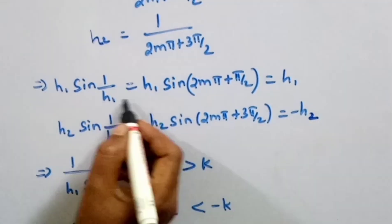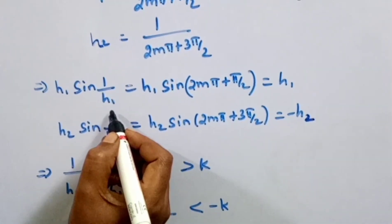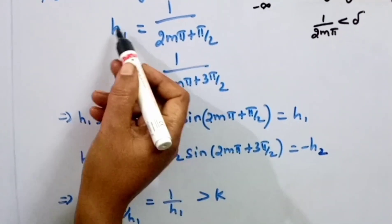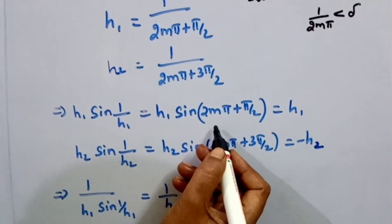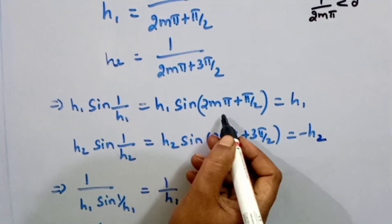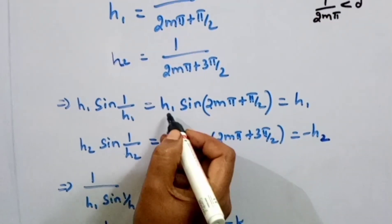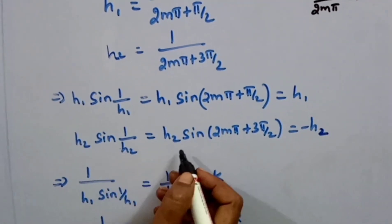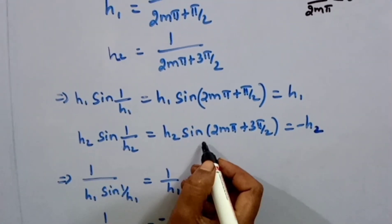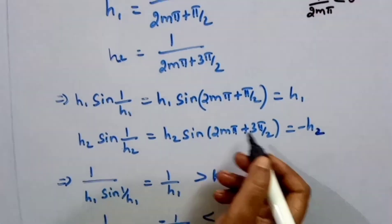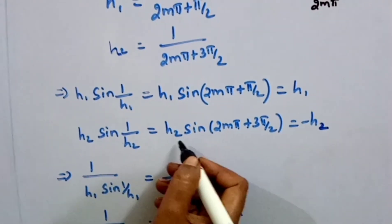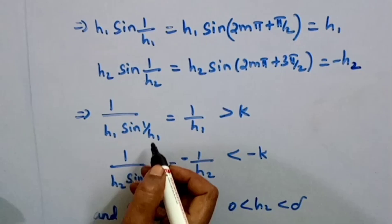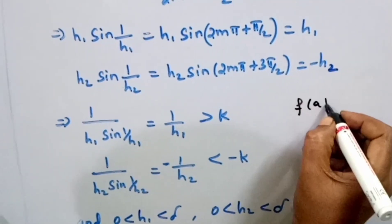We calculate the value of sin(1/h₁) and sin(1/h₂). For h₁ = 1/(2mπ), sin(1/h₁) = sin(2mπ) = 0, so we consider the reciprocal. For h₂, sin(1/h₂) = sin(2mπ + π/2) = sin(3π/2) giving value minus 1. We then compute f(a+h₁) = (1/h₁)·sin(1/h₁) and f(a+h₂).